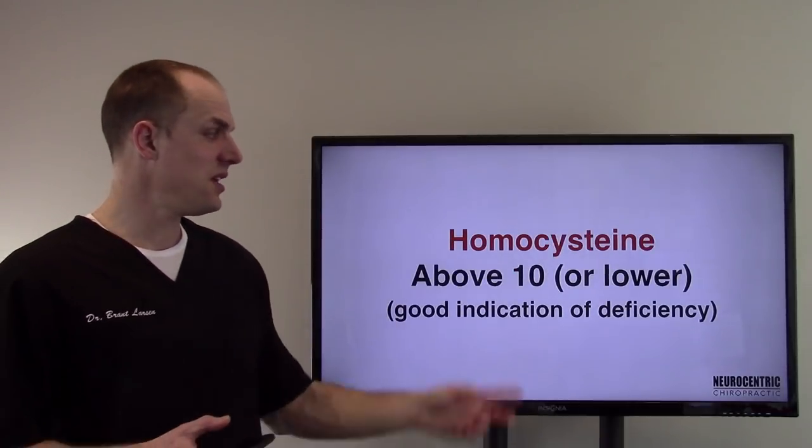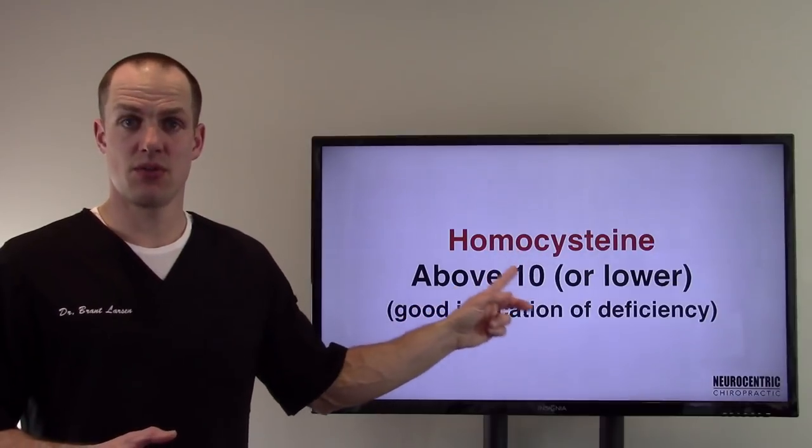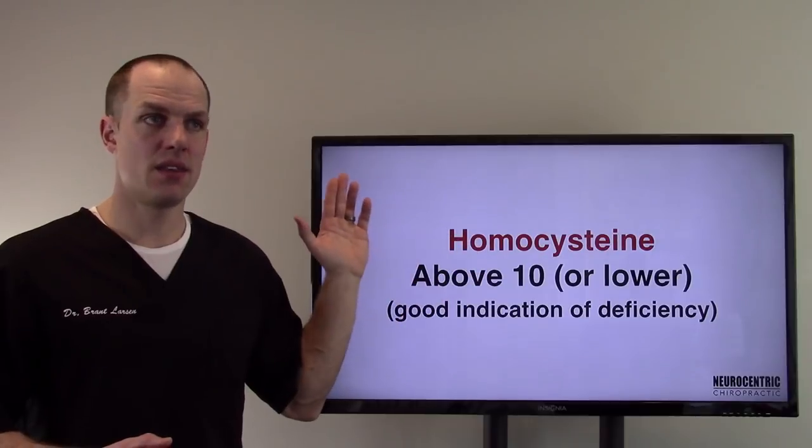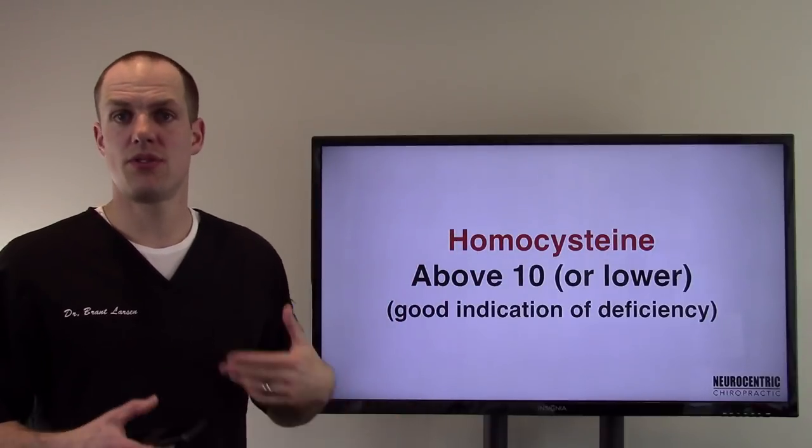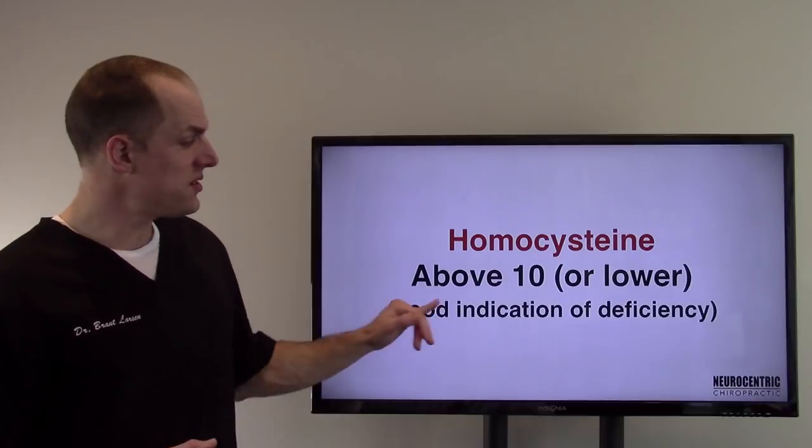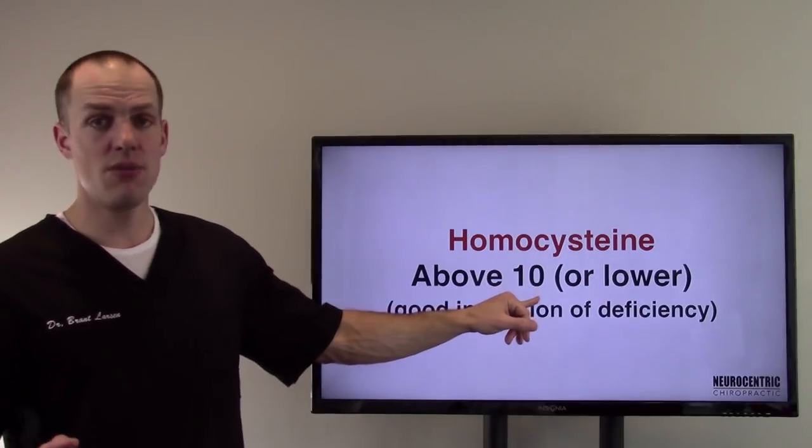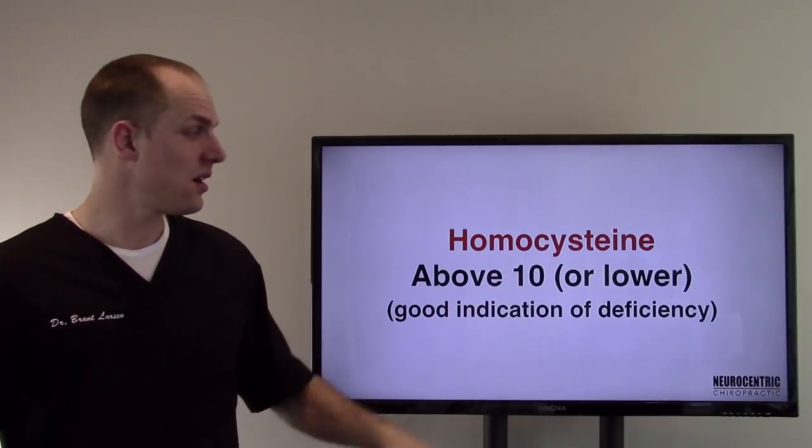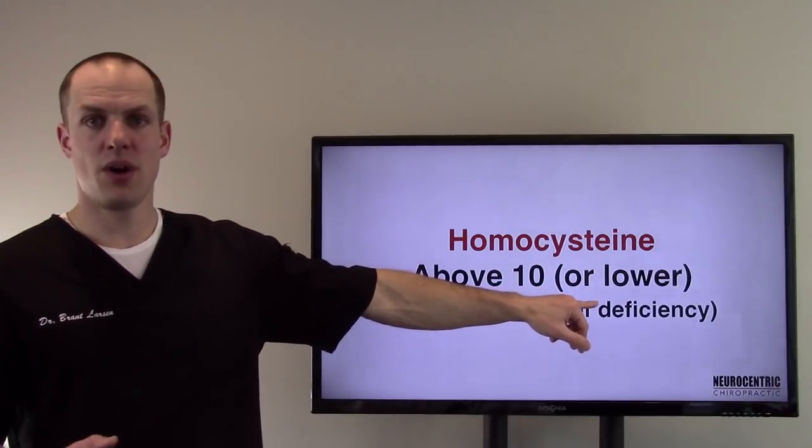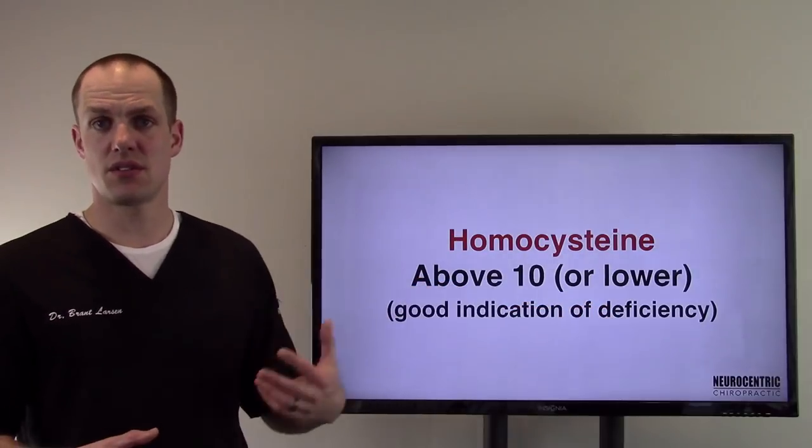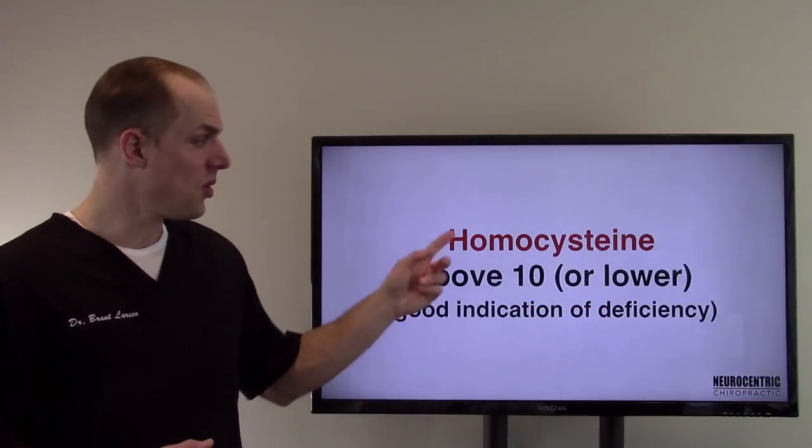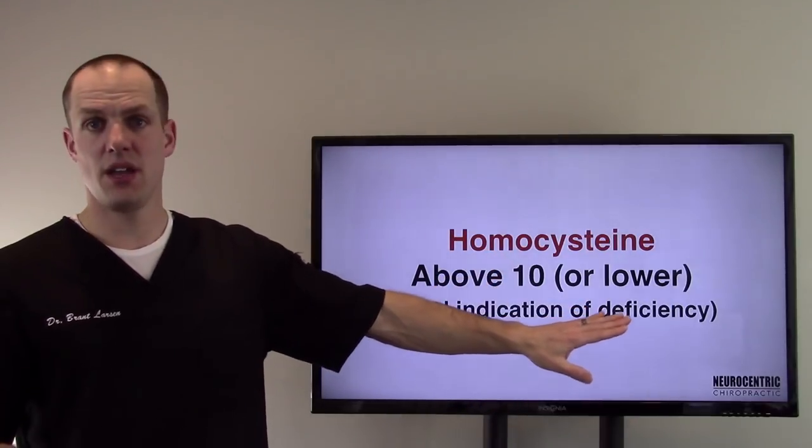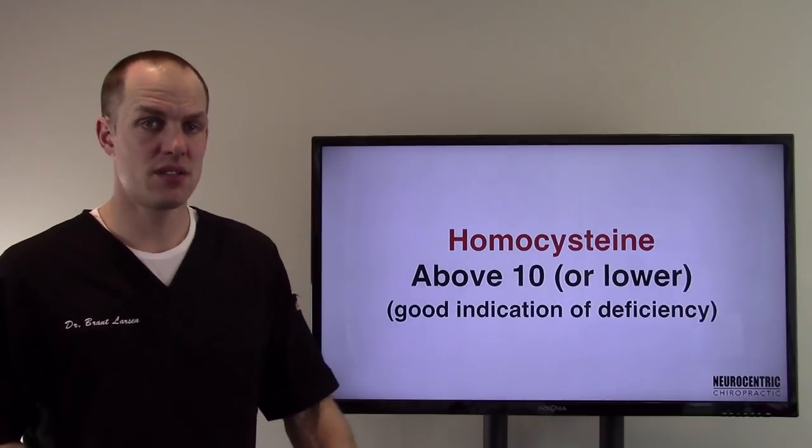Then number three is homocysteine. This one, for some reason, is not commonly run. I don't really understand why, because I find this high in the vast majority of people who have some type of chronic condition. We'll say anything above a 10. A 10 for sure. You should not be over a 10. I've seen above 20. That person's brain is on fire. Or even lower, above an eight or above a seven or six, even some people say. Homocysteine is an inflammation marker, but it's also a good indication of a deficiency of B12, B9, B6 as well.